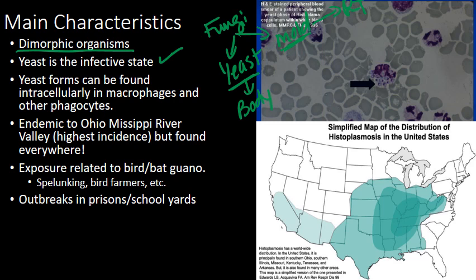The yeasts can be found intracellularly in macrophages and other phagocytes, or extracellularly as well. You can see here, this arrow is pointing at a phagocyte — this whole thing is a phagocyte, and over here is the nucleus of it. These little dots are all little intracellular circular yeast forms. So this phagocyte here is just full of Histoplasma yeast.